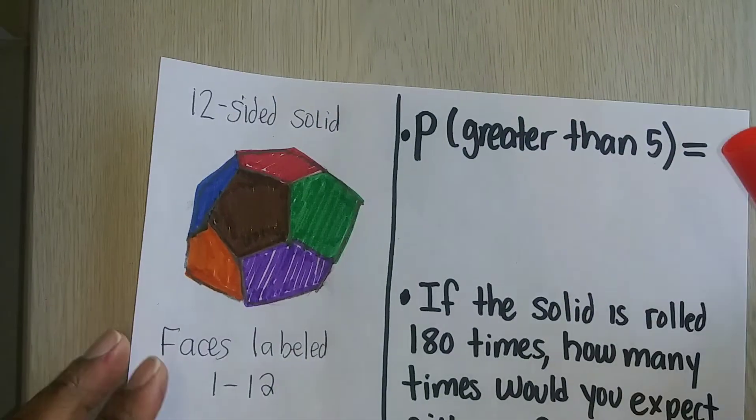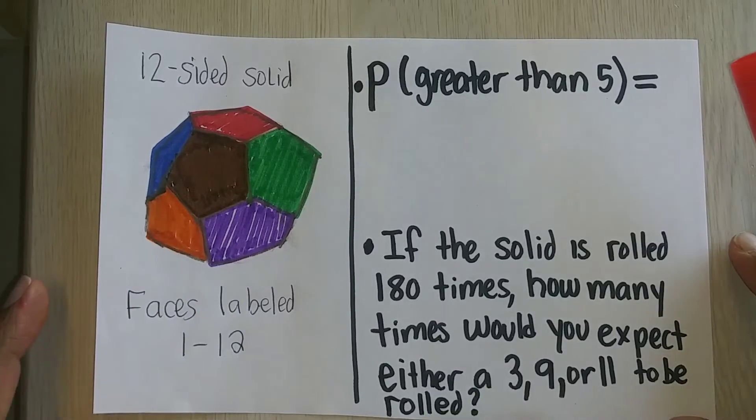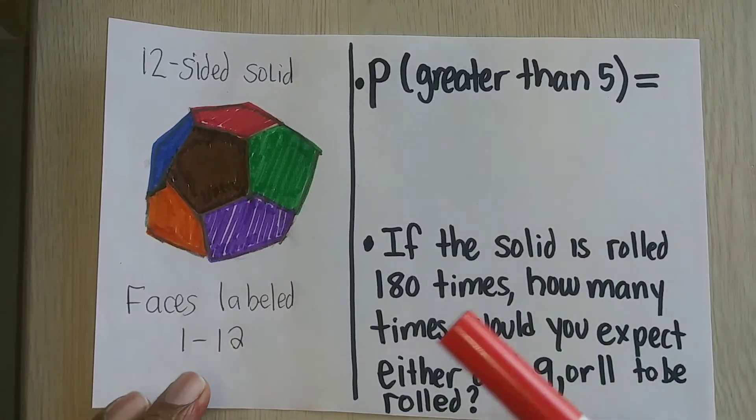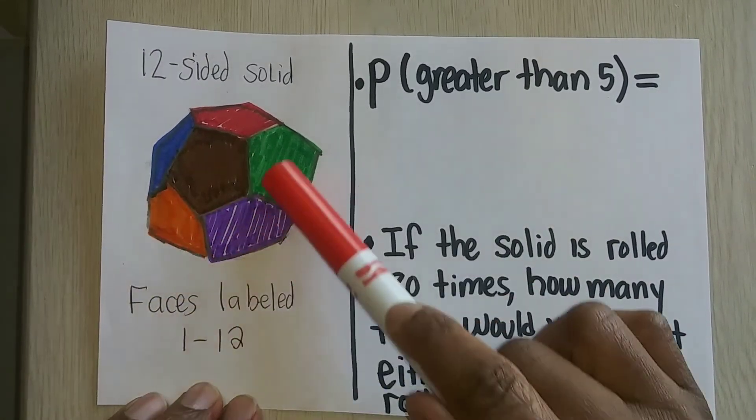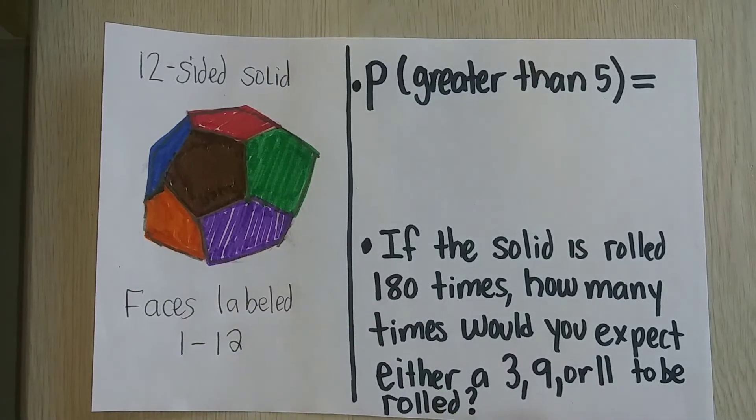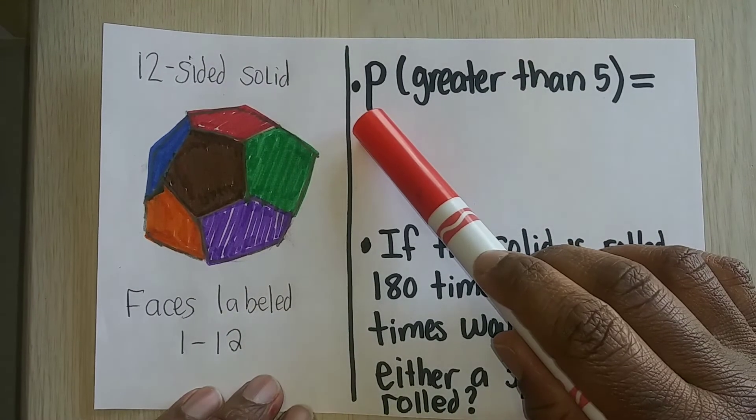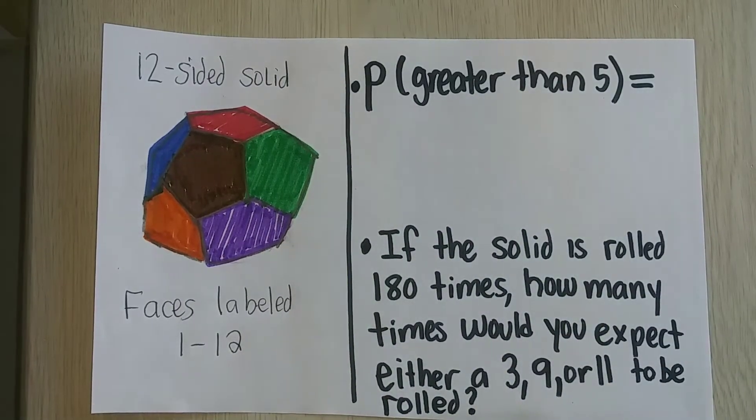So let's take a look at this last one. This is theoretical probability, what the math says. So now I have this 12-sided solid, and the faces are labeled 1 through 12. Now, you don't see them, but let's pretend like they're numbered 1 through 12. What is the probability that you will land on a number greater than 5?